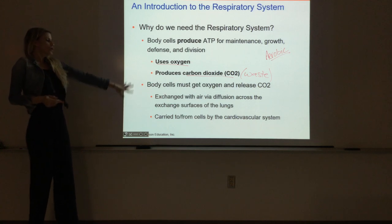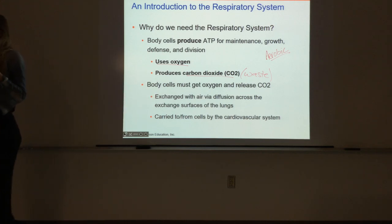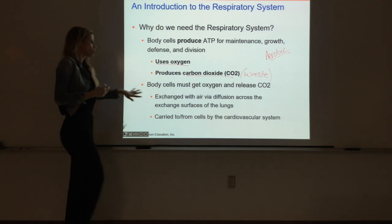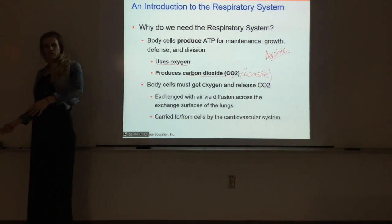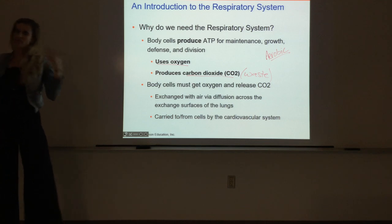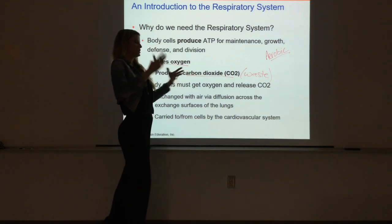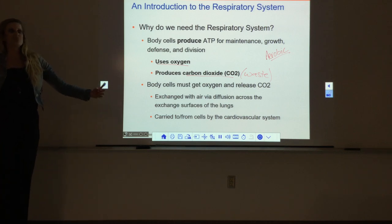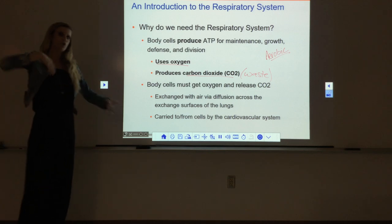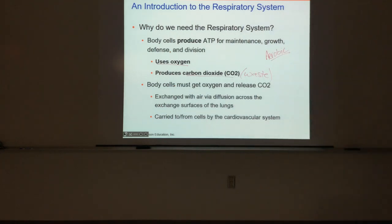When we look at obtaining oxygen and getting rid of CO2, we see that the respiratory system and the cardiovascular system really work hand in hand. The respiratory system brings the air in and out and provides surfaces for diffusion - for oxygen to go from the air into the bloodstream, and for CO2 to go from the bloodstream into the air so we can exhale it. The blood, heart, and vessels then deliver that oxygen to the cells, or take CO2 from the cells back to the lungs.